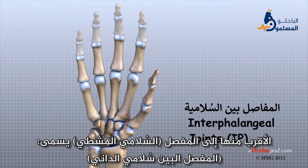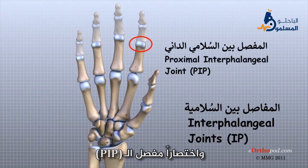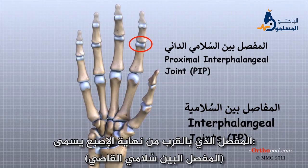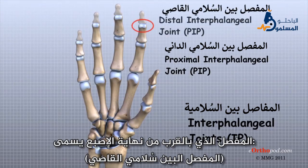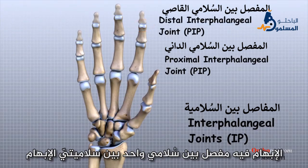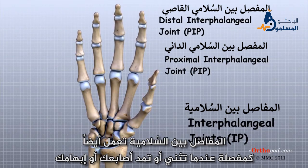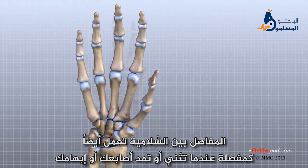The one closest to the MCP joint is called the proximal IP joint, or the PIP joint. The joint near the end of the finger is called the distal IP joint, or DIP joint. The thumb only has one IP joint between the two thumb phalanges. The IP joints of the digits also work like hinges when you bend and straighten your fingers and thumb.